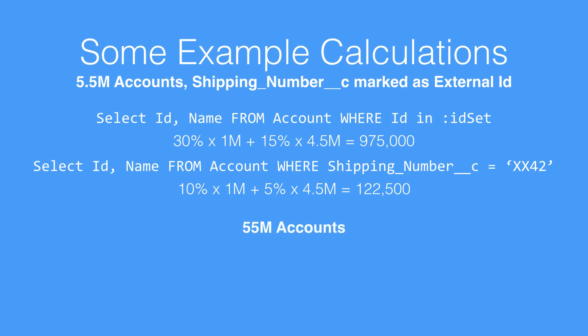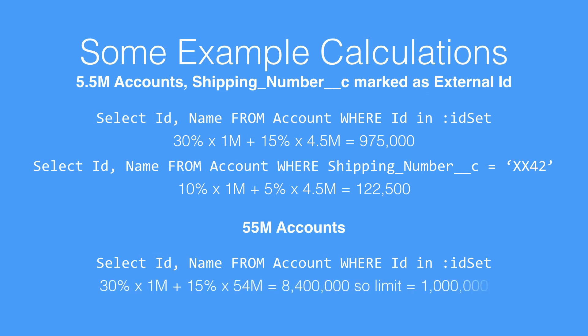The reason this is important is that if you increase the data volumes, you need to be aware of how much you're retrieving. So if we have 55 million accounts in the system and we select the ID and the name from account where an ID is in a particular ID set, you can see that this gives us a grand total of potentially 8.4 million records. However, the maximum that the system is still allowed to retrieve is only 1 million — that's the threshold that's put in place for us, even though we have a larger volume of records.